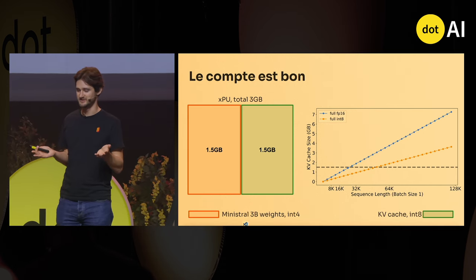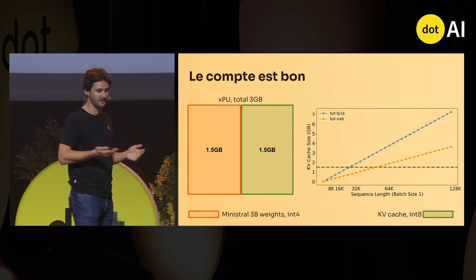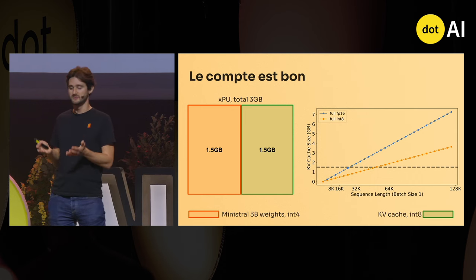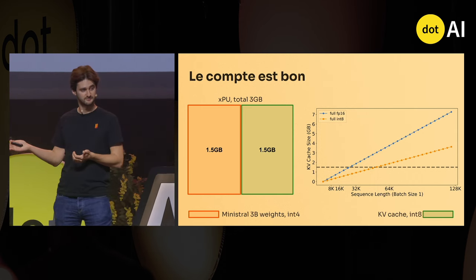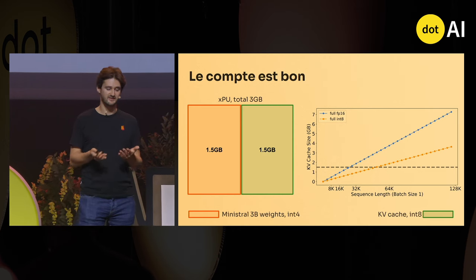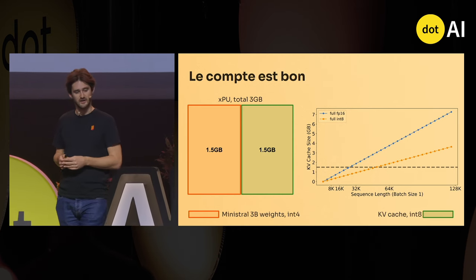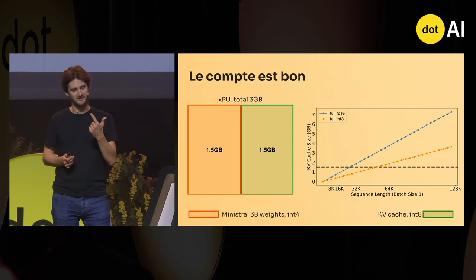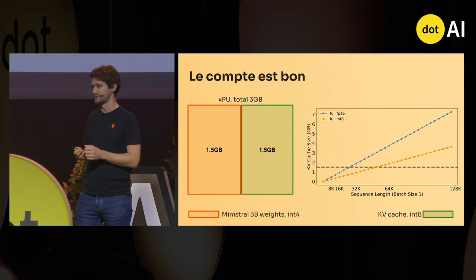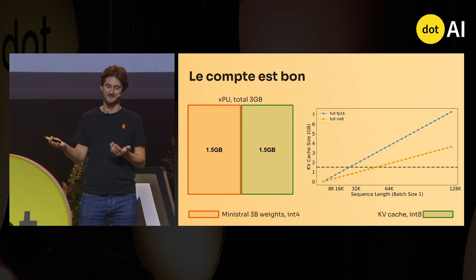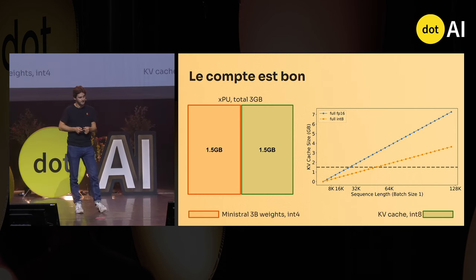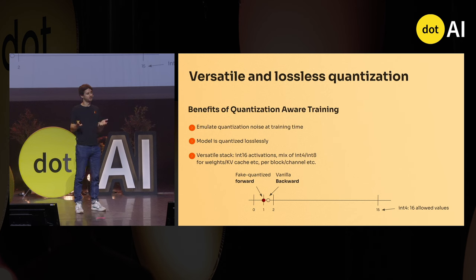With 1.5 gigs for the KV cache, is it good enough for your application? It depends. With the KV cache in full precision, you can fit a bit less than 32K tokens. If you quantize it to INT8, then it's a bit less than 64K tokens. And when you quantize, you not only reduce space but also make the model go faster — not quite twice as fast, maybe 1.5x going from 16-bit to 8-bit, and again from 8-bit to 4-bit.